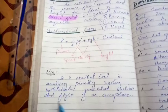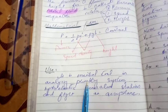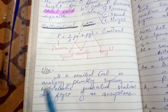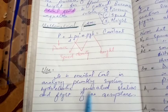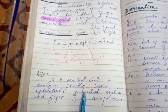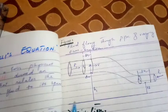Bernoulli's equation is an essential tool in analyzing plumbing systems — like pipelines of water — hydroelectric generation stations where water is used to generate electricity, and the flight of an airplane. There are many applications of Bernoulli's equation.